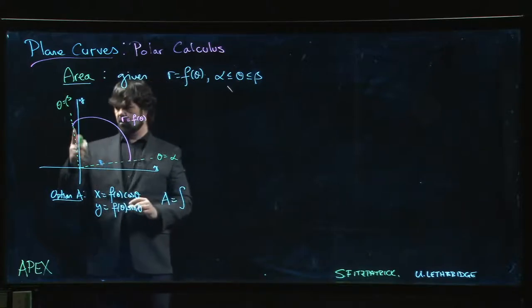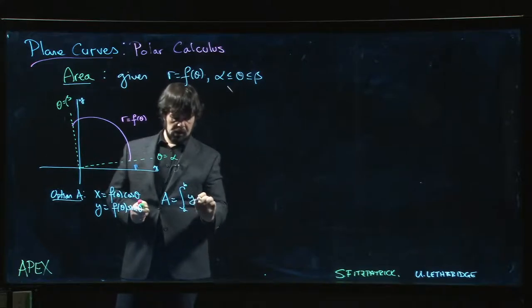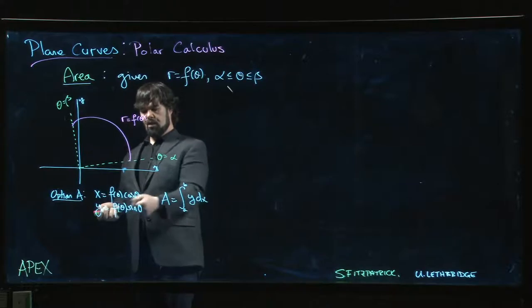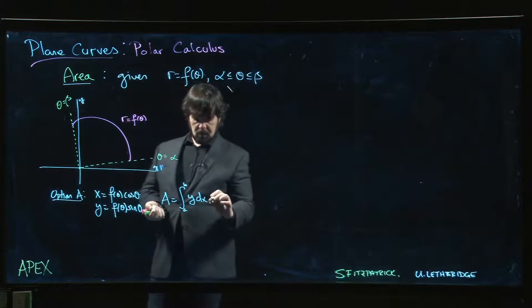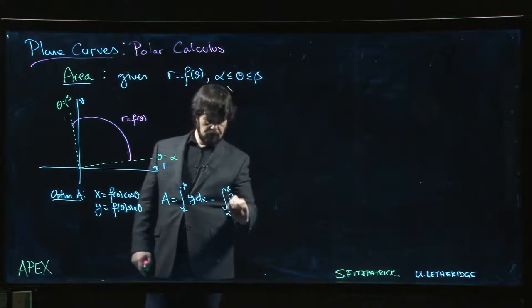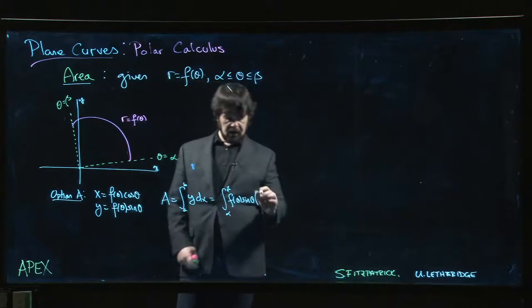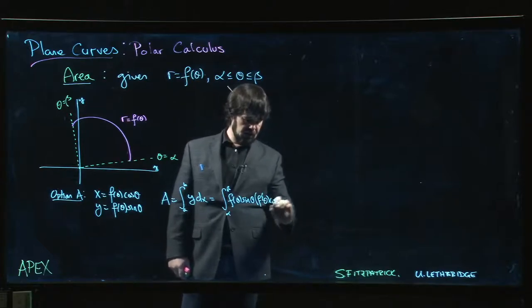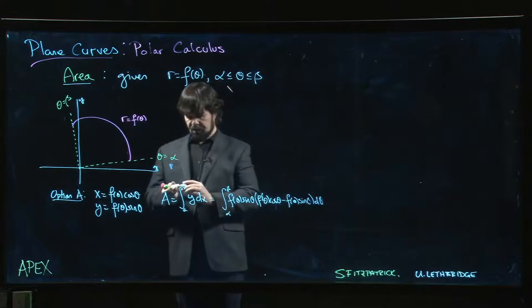From x equals a to x equals b of y dx. But then you do a change of variables, so you let y equal f of theta sin theta, you let x equal f of theta cos theta, you get alpha, you get beta, you get f of theta sin theta, and then you get the derivative here. You're gonna get, you gotta do product rule for this, maybe that's why people don't like doing it this way: f prime of theta cos theta minus f of theta sin theta d theta.